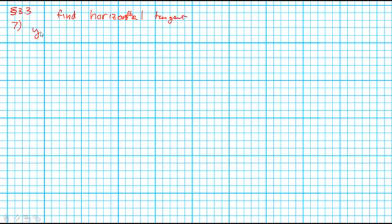The curve in problem number 7 is y equals x cubed minus 2x squared plus x plus 1. To do this problem I am going to remind ourselves that horizontal tangents occur when the derivative is equal to 0.